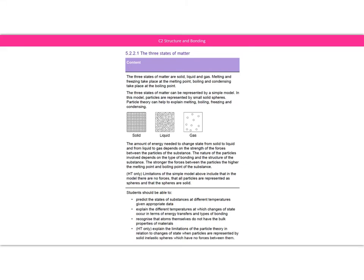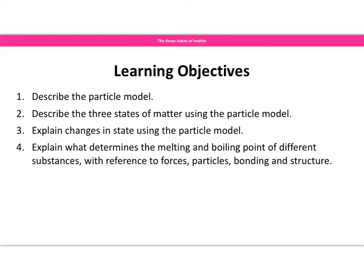The second video on structure and bonding begins with the three states of matter. If you look at the spec page on the screen and the particle model diagrams, you'll see this very much starts from what you learned in year seven about particle model or particle theory — the ideas of different structures of solids, liquids, and gases, and the forces of attraction between those particles. The spec requires us to describe the particle model, the three states of matter, explain changes of state, and understand what determines melting and boiling points.